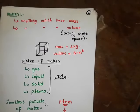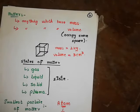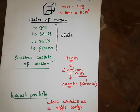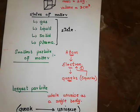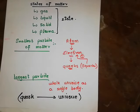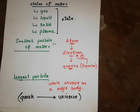We discussed matter: anything which has mass and occupies some volume is called matter. The states of matter we discussed are solid, liquid, gas, and plasma. In the domain of matter, the smallest particle we considered is the quark, and the largest is the universe as a single body — all of this we will study in physics.